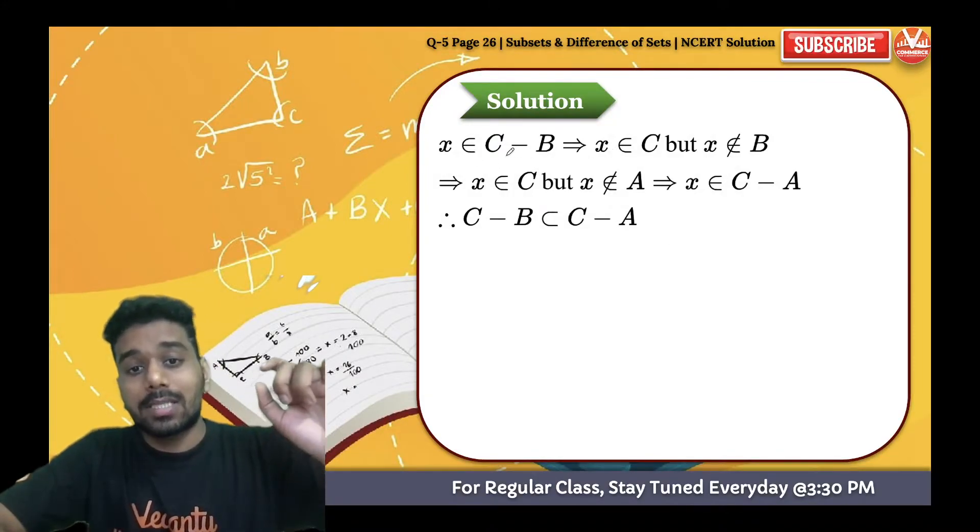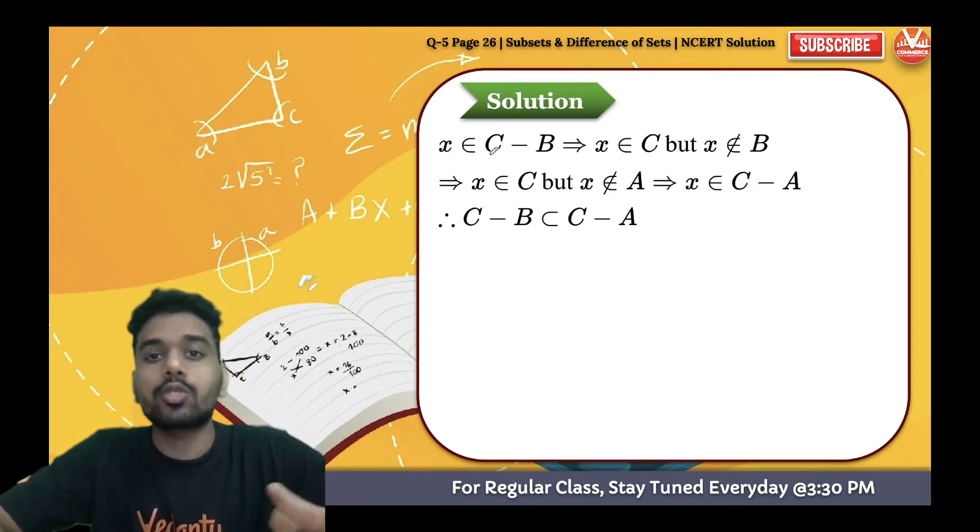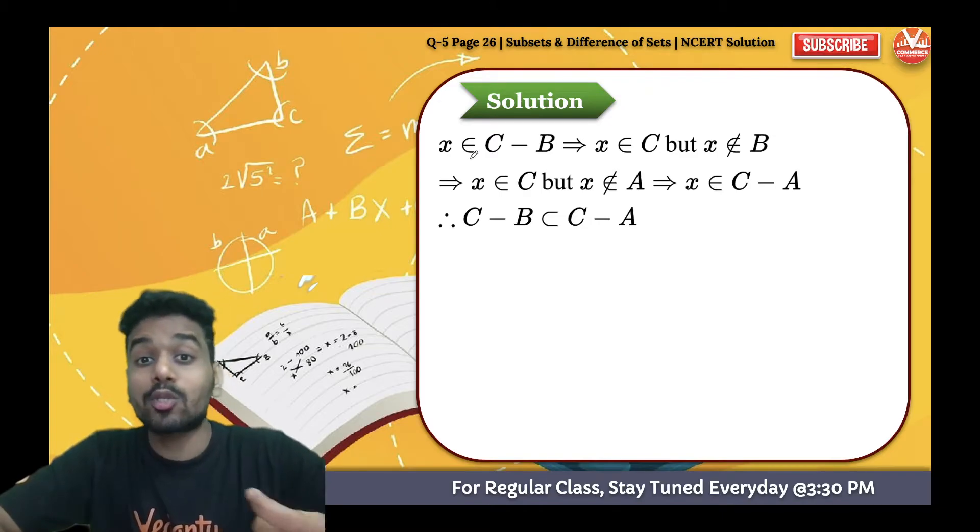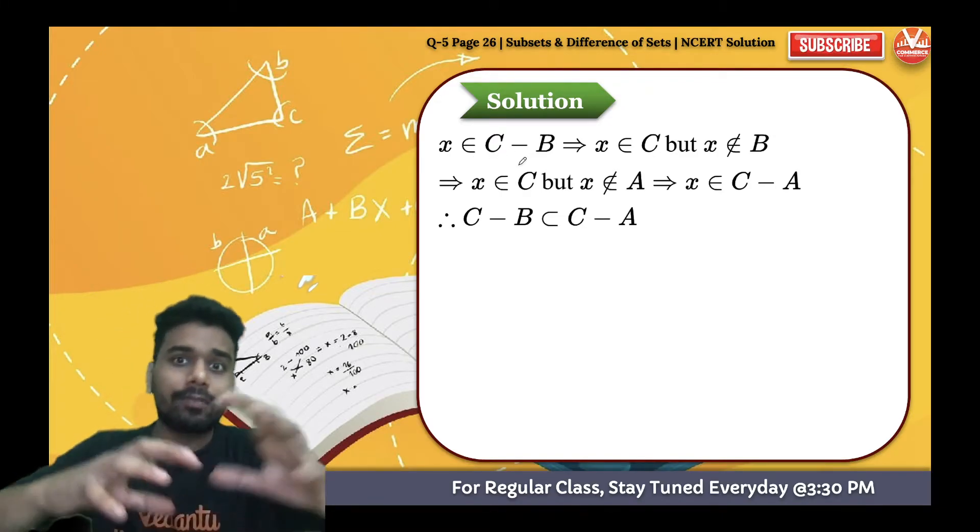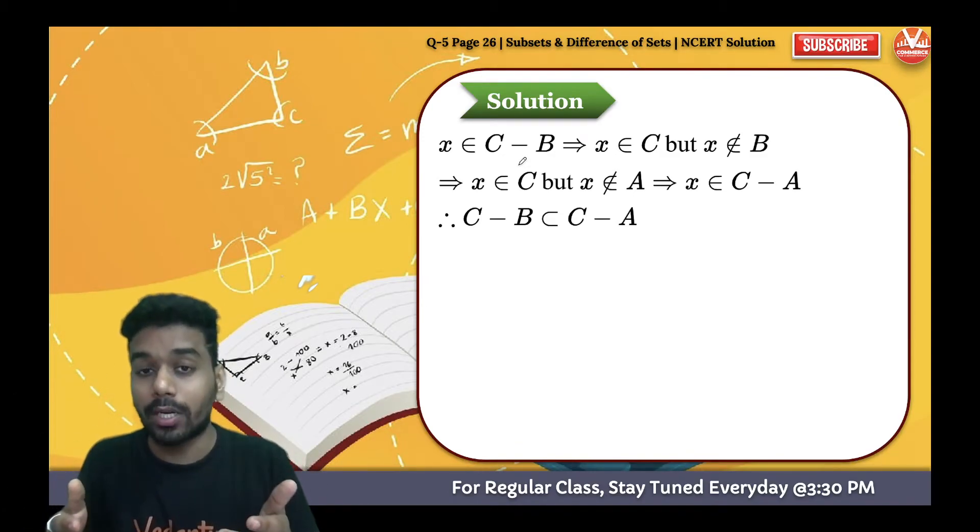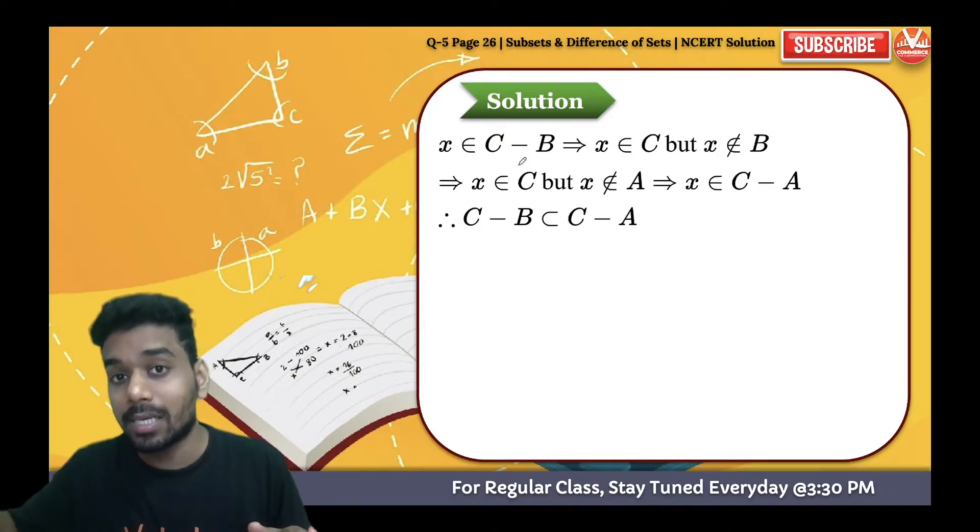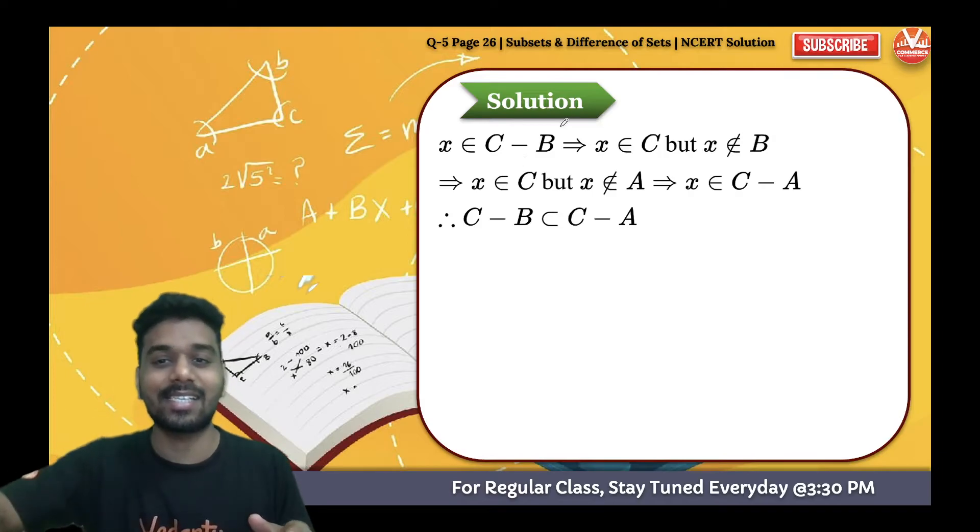Let's suppose x belongs to C minus B. x belongs to C minus B means that after subtraction, whatever remains is not present in B because we have eliminated those, but it's present in C.